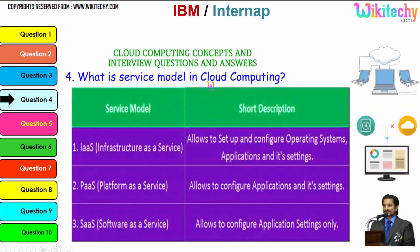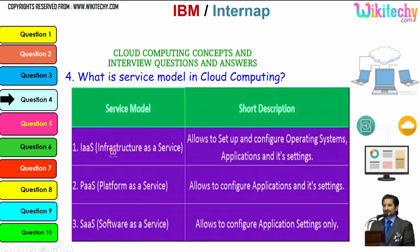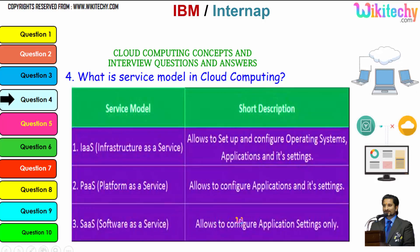What is the service model in cloud computing? The three major service models are: infrastructure as a service, which allows you to set up and configure the operating system, application, and its settings — you are given a server and can install any operating system or application you want; platform as a service, where you are allocated a specified operating system and can put any applications and settings; and software as a service, where you are given a software and can adjust application settings.